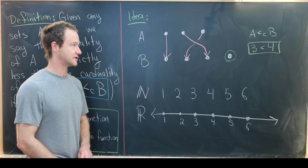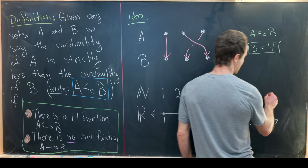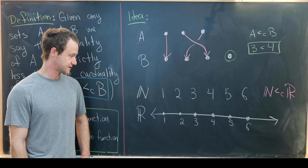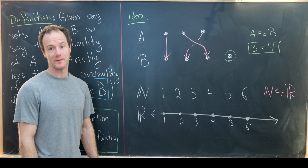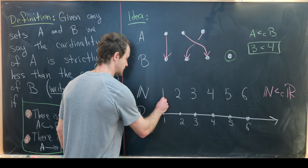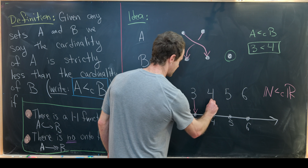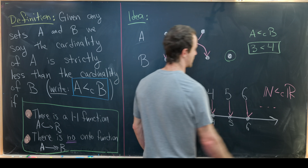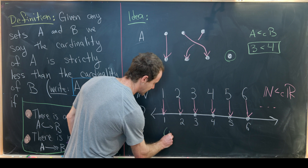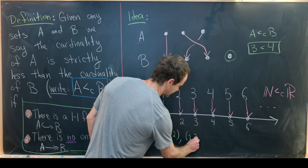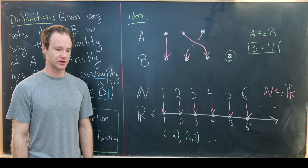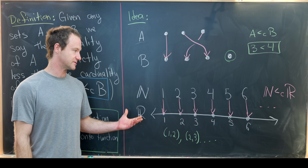Now let's look at another classic example: the cardinality of the natural numbers versus the cardinality of the real numbers. It's well known that the cardinality of N is strictly less than the cardinality of R. We can easily exhibit a one-to-one function from N to R — N naturally embeds inside R, sending 1 to 1, 2 to 2, 3 to 3, and so on. This is most definitely one-to-one, but it's not onto because it misses everything in the open interval from 1 to 2, from 2 to 3, and so forth. That's not to say we couldn't cook up some onto function — we actually have to check a lot more to show that's impossible, but we won't do that here.